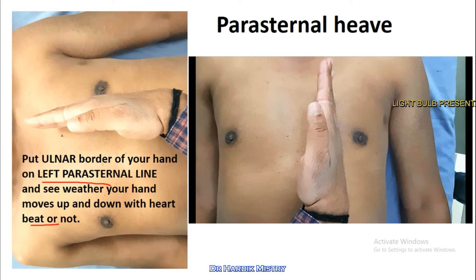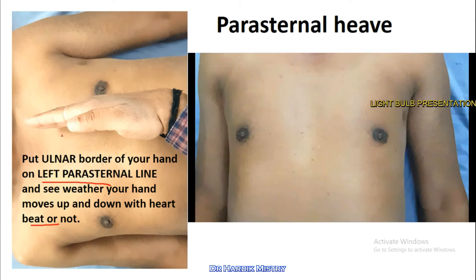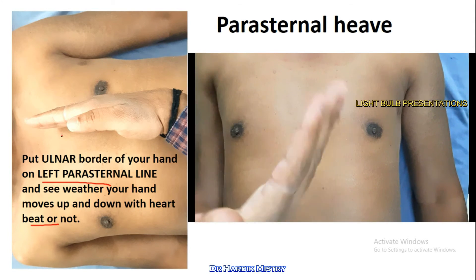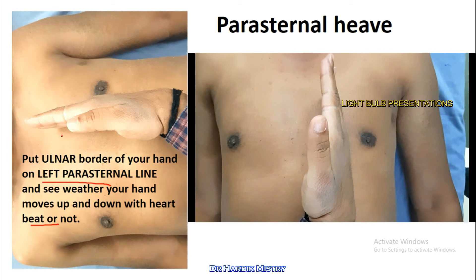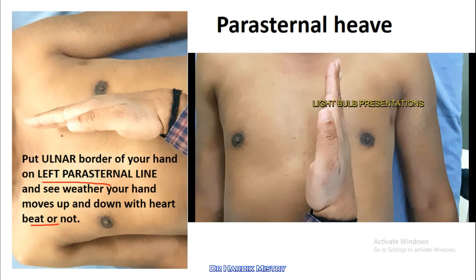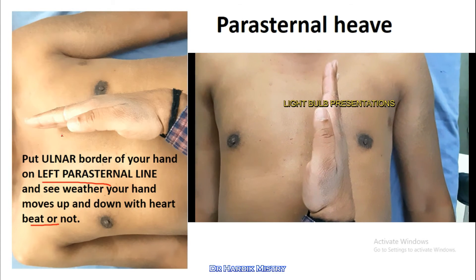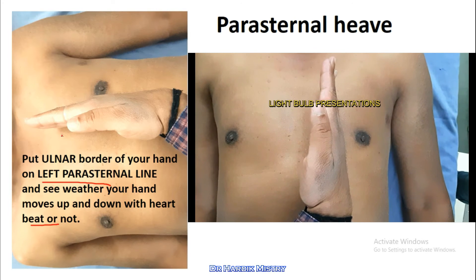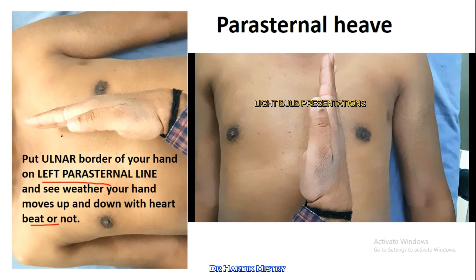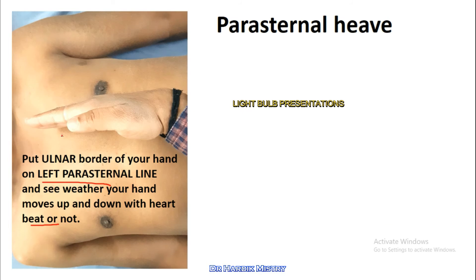This is an abnormal condition, and we must find out in our patient whether it is present or not. Put the ulnar border of your hand or palm over the left parasternal line and see whether your palm is moving up and down with each heartbeat. If it is moving up and down, then there is the presence of parasternal heave, and it is mostly seen in patients with right ventricular hypertrophy.